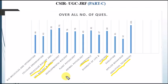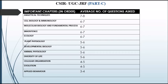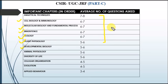If you study these chapters thoroughly, you can easily qualify Part C of CSIR JRF. From the table, analytical techniques are the most important chapter for Part C. Other important chapters include cell biology, molecular biology and fundamental processes, inheritance, ecology, plant physiology, and developmental biology. If you read at least five to six chapters thoroughly, you can correctly answer 16 to 20 questions, which is enough to qualify the CSIR examination.